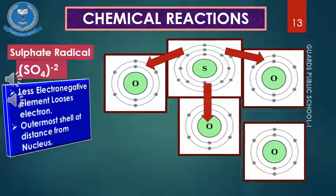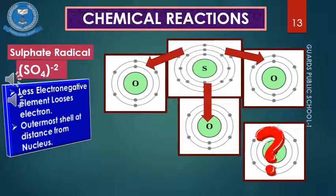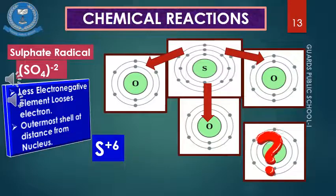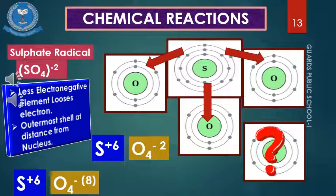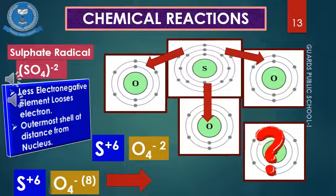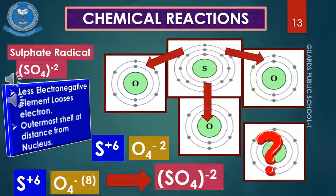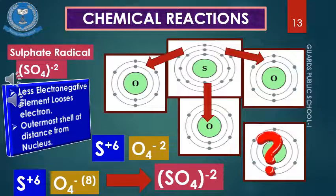Sulfur donates its 6 valence electrons to the four oxygens — giving 2 electrons each to three oxygens, but the fourth oxygen remains vacant. Sulfur gets charge +6; four oxygens at -2 each give -8 total. Net: +6 + (-8) = -2. The entire sulfate radical SO₄ carries charge -2. In the structure, one oxygen remains vacant, meaning the radical still requires 2 more electrons, confirming the overall charge is -2.